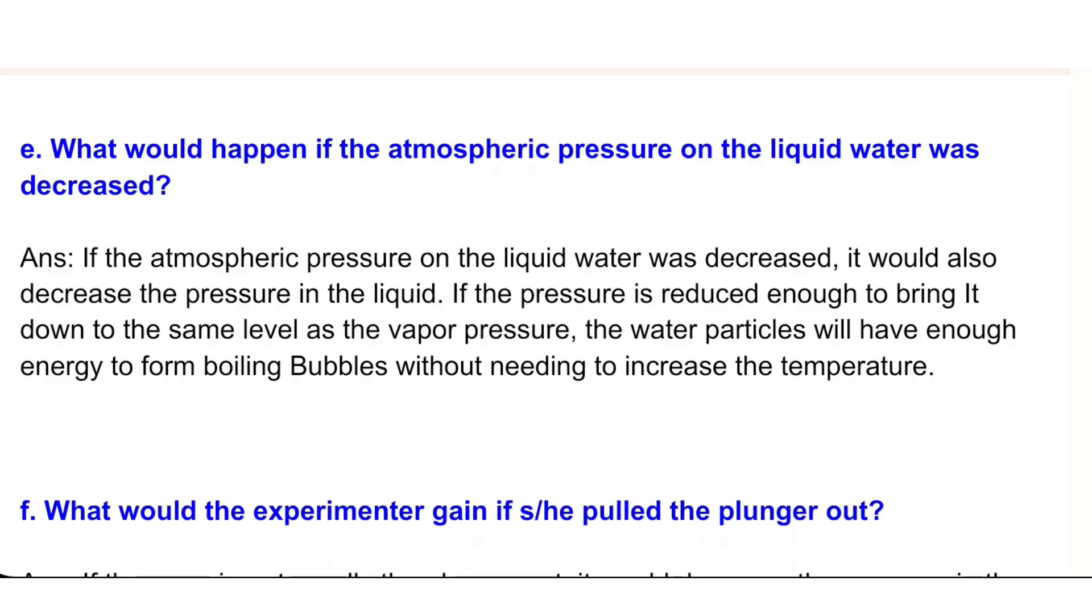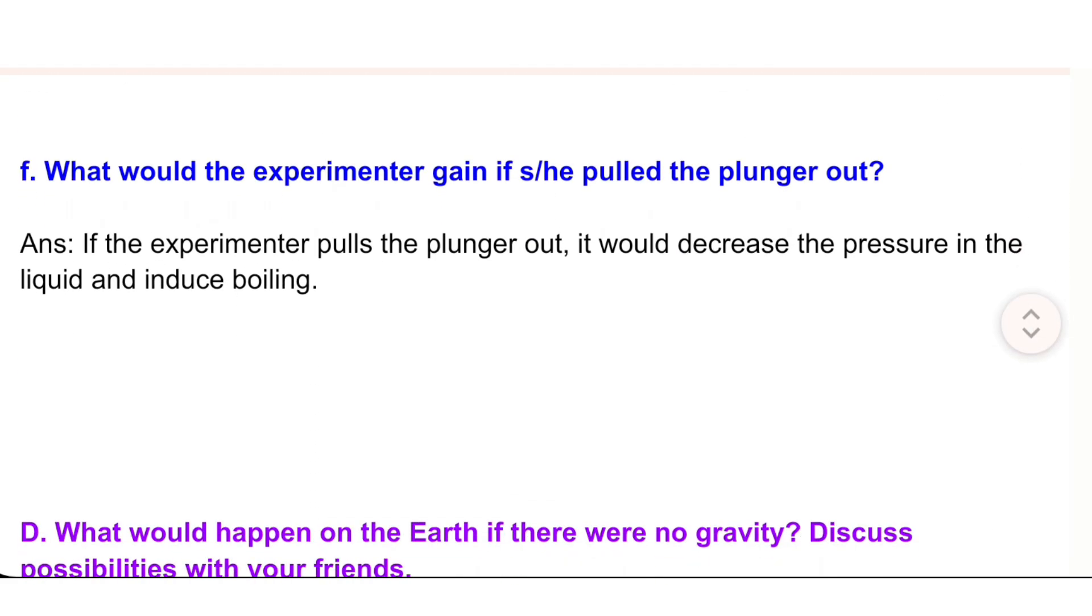f) What would the experimenter gain if he pulled the plunger out? Answer: If the experimenter pulls the plunger out, it would decrease the pressure in the liquid and induce boiling.